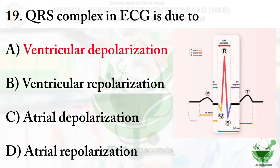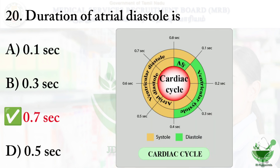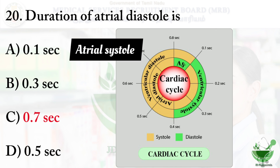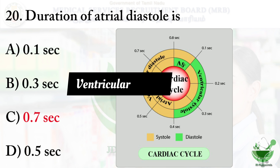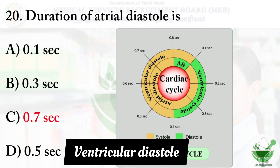Question number 20: The duration of atrial diastole is — A) 0.1 second, B) 0.3 second, C) 0.7 second, D) 0.5 second. The correct option is C — 0.7 second. This relates to the cardiac cycle: atrial systole is 0.1 second, atrial diastole is 0.7 second, ventricular systole is 0.3 second, and ventricular diastole is 0.5 second.